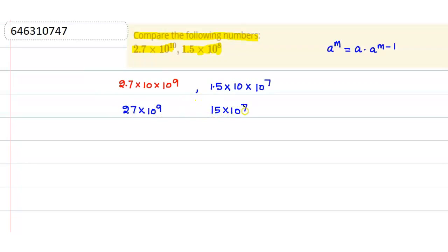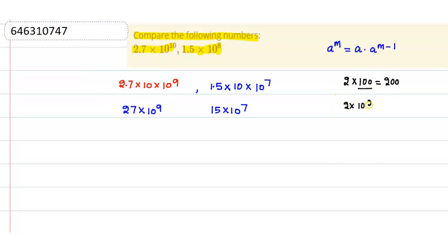Now, see. If I say this is multiplying with, let's say 2 multiplying with 100, so this is 200. Or I can write this 100 as 2 into 10 to the power 2, and this gives 200. As you can see, this is 10 to the power 2 — that's why the number of zeros we have is 2.